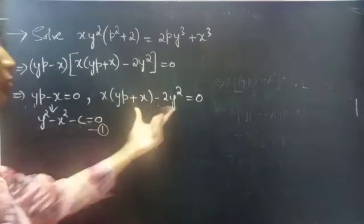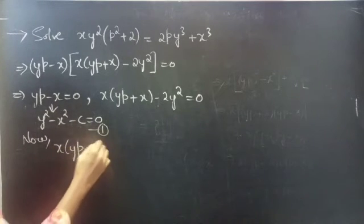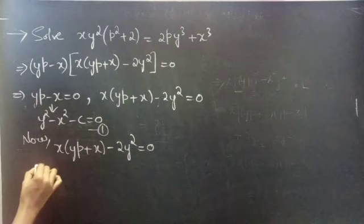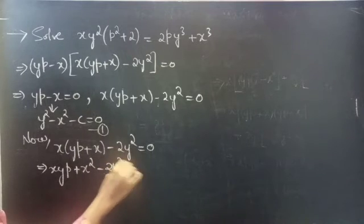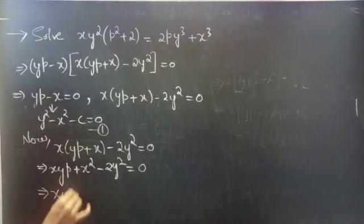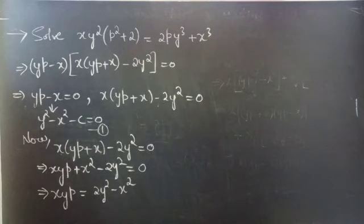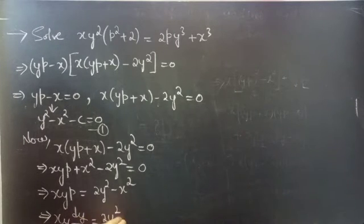Now consider the second factor: x(yp + x) - 2y² = 0. Expanding: xyp + x² - 2y² = 0. Notice there is only one p here, so we can write xyp = 2y² - x². Substituting p = dy/dx: xy·dy/dx = 2y² - x².